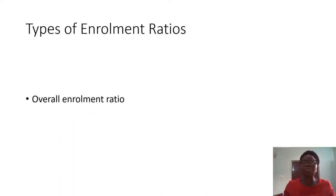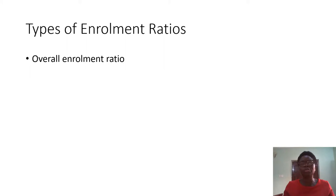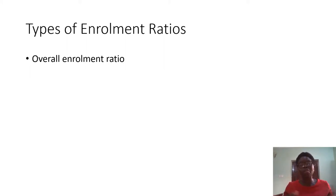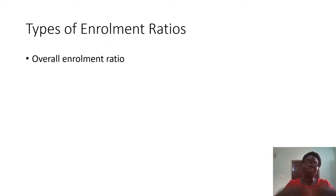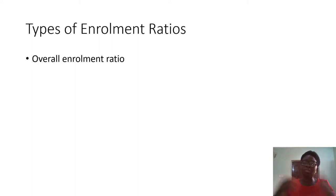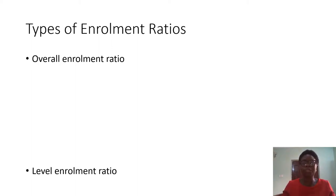There are different types of enrollment ratio. We have what we call the overall enrollment ratio. The overall enrollment ratio gives you the total percentage of the population that are enrolled in school, irrespective of the level of education.